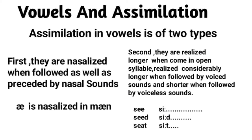The second point is that vowels are longer when they are in an open syllable, comparatively shorter when followed by a voiced sound, and short when followed by a voiceless sound. For example, 'see' — the EE sound is not followed by any consonant, so its pronunciation is longer. Compare it with 'seed' — the same EE sound is comparatively shorter because it is followed by a voiced sound D. And in 'seat,' the EE vowel is followed by a voiceless sound T, so the vowel is short.